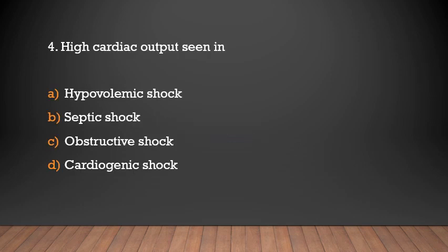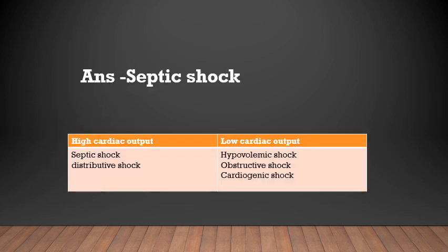High cardiac output is seen in which type of shock? Hypovolemic shock, septic shock, obstructive shock, cardiogenic shock. Answer: Septic shock. High cardiac output is seen in septic shock and distributive shock, whereas low cardiac output is seen in hypovolemic shock, obstructive shock, and cardiogenic shock.